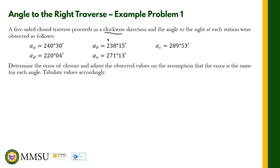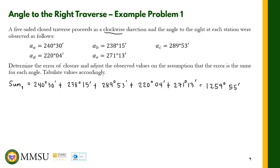We need to get two sums. The first sum is the sum of the given observed angles: alpha A plus alpha B plus alpha C plus alpha D plus alpha E. The sum is equal to 1259 degrees 55 minutes.